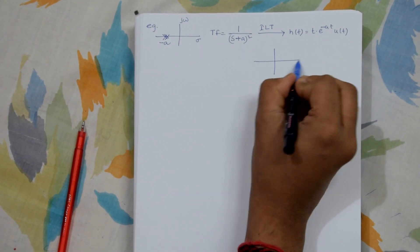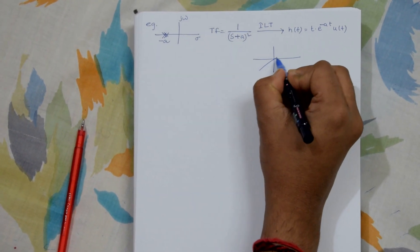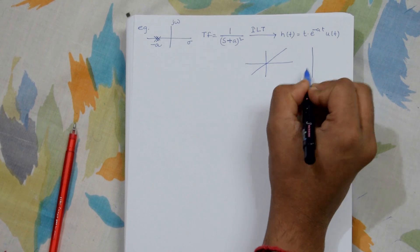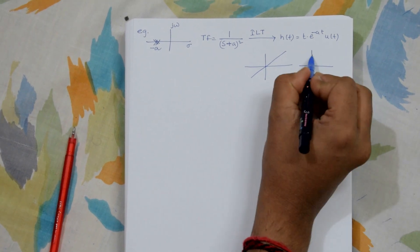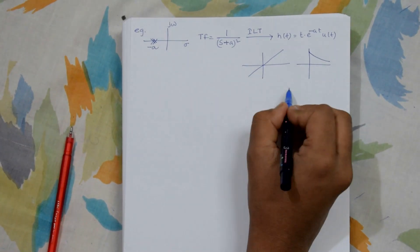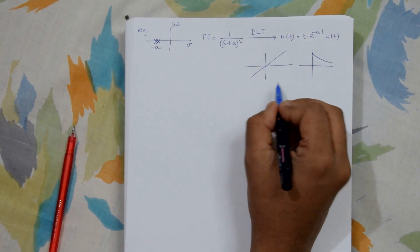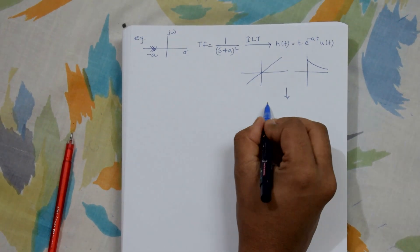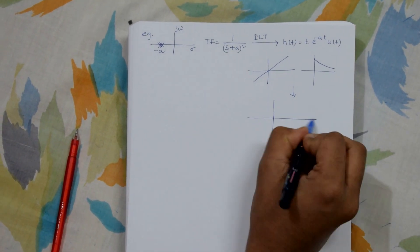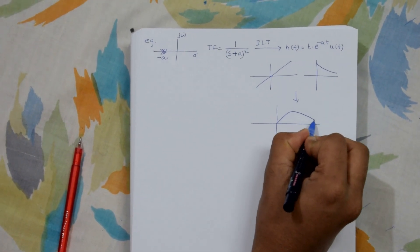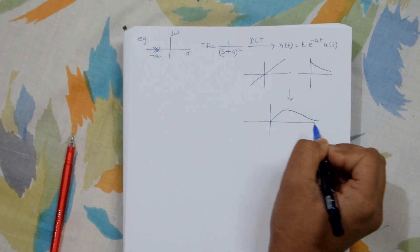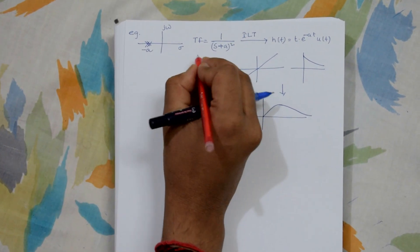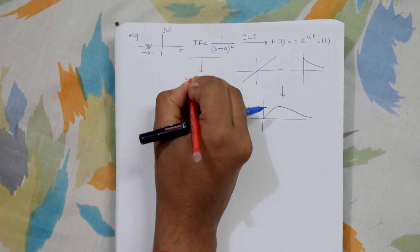For t we know it's a ramp function, and e^(−at) · u(t) is an exponentially decreasing one. If we multiply these two together we get a graph that rises then falls, which is also a stable one, so the transfer function is stable.